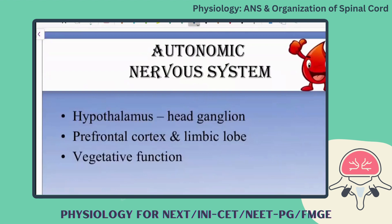The autonomic nervous system's head and controlling ganglion is the hypothalamus, which also gets signals from the prefrontal cortex and the limbic lobe, which plays a major role in controlling emotions. For example, during sympathetic-parasympathetic activation - if someone suddenly tells you tomorrow is your FMGE exam - your heart rate increases, respiratory rate increases, palpitations occur, because the limbic lobe gives sensory signals to the autonomic nervous system to activate sympathetic or parasympathetic responses.